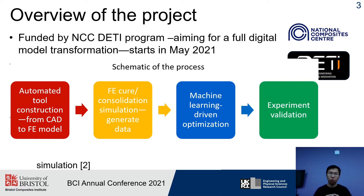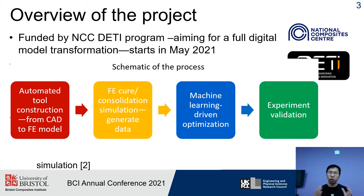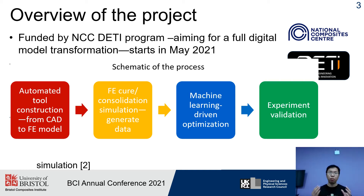The whole process is designed into four different stages. In the first two stages, we focus on transforming the CAD of the desired part into the FE model and running the consolidation simulation under multiple cases. The results are then fed into the third stage — the machine learning-driven optimisation — to obtain the optimum parameters for mould design with no defects generated. In the last stage, we will conduct the experimental validation.